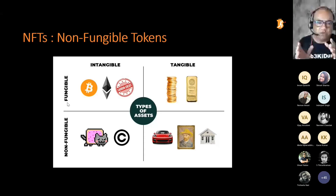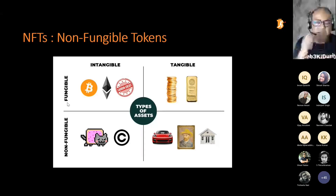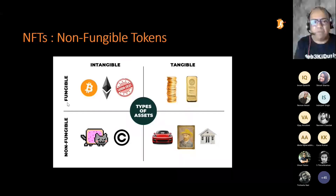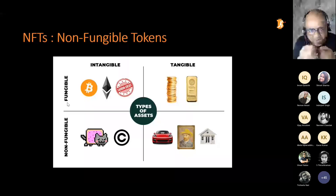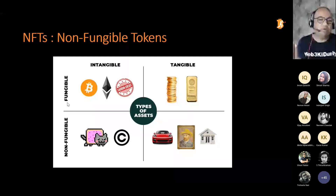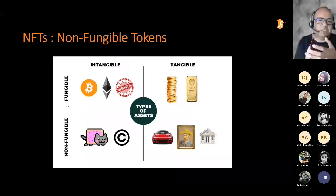What is fungible? Suppose if I have 100 rupees and I give it to you, and one week later I say give me back my 100 rupees — you give me back some other 100 rupees, not the exact one I gave you, and I'm okay with that. Fungible assets are interchangeable. That's why Bitcoin is fungible — one Bitcoin is one Bitcoin, one Ethereum is one Ethereum, a 10-dollar note is a 10-dollar note, carbon credits are interchangeable.